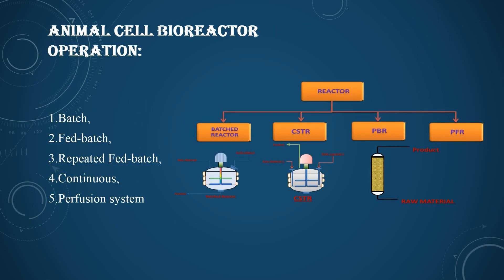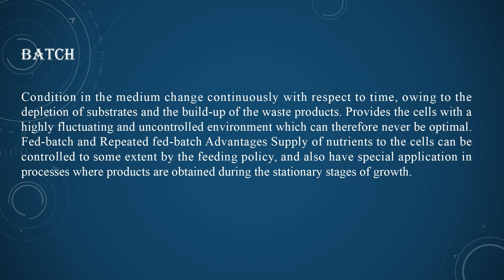Animal cell bioreactor operations consider five types: batch, fed-batch, repetitive fed-batch, continuous process, and perfusion system. In batch operation, the medium changes continuously with respect to time owing to the dependency on substrate and development of waste products, providing the cell with a highly fluctuating and uncontrolled environment, which can therefore never be optimal. Fed-batch and repetitive fed-batch allow the supply of nutrients to be controlled to some extent by the feeding policy.